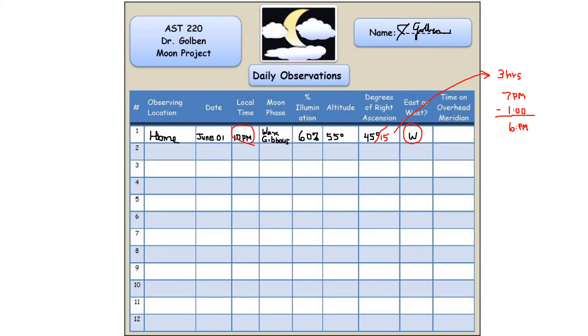My location is North Alabama. We have a correction for location to put us within the time zone of adding 16 minutes. Depending on where you are in your time zone, that may be different. So my final time is going to be 6:16 p.m. That's what I'm going to put in for my time on the overhead meridian.